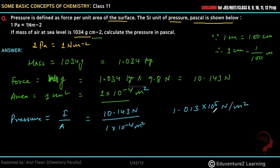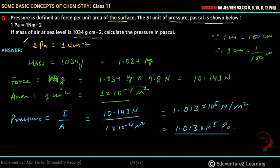अब यहाँ पर दिया हुआ है कि 1 Newton per meter square equals to 1 Pascal, तो यह Newton per meter square में आ गया. इसी को हम लोग 1.013 into 10 to the power 5 Pascal बोल सकते हैं. हम लोग को calculate the pressure in Pascal बोला गया था, तो Pascal में हमारा answer आ गया: 1.013 into 10 to the power 5 Pascal. That's all, thank you!